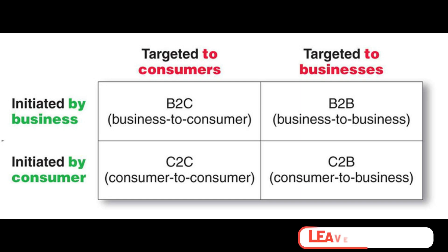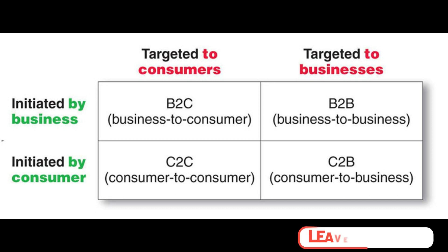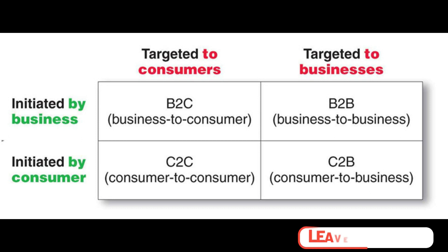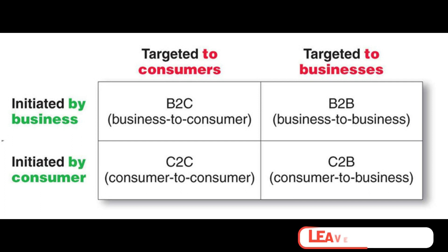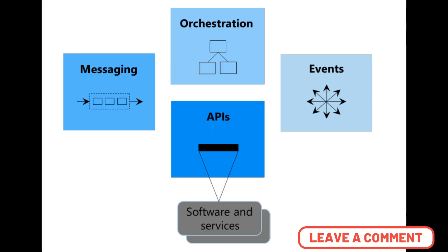Integration domains might differ from one customer to another because there are different business processes and different industries. Every business within the same industry runs differently, but there are certain standards followed at the fundamental level that remain the same. You also need to figure out how your user-centric applications are going to connect to cloud — cloud-to-cloud integration, cloud-to-data-center integration, cloud-to-IoT integration, and IoT-to-legacy application integration. There are a lot of moving parts to understand before jumping to the conclusion that a particular application or platform is sufficient for your organization.